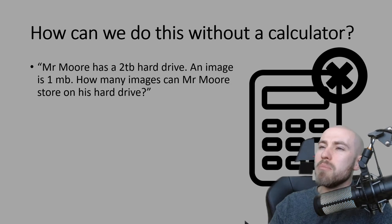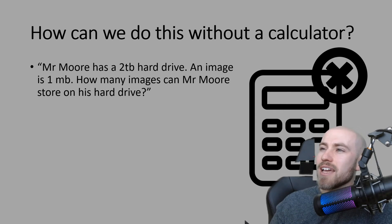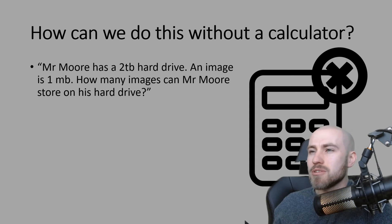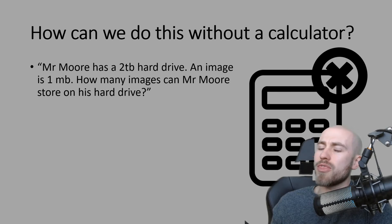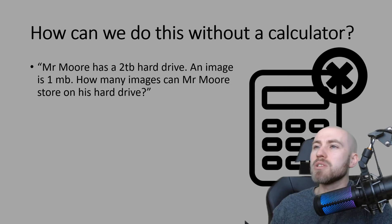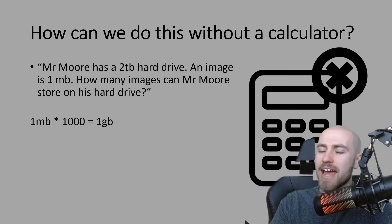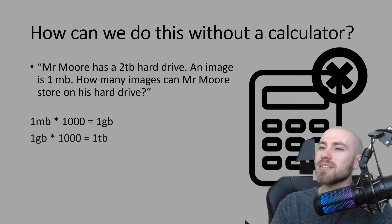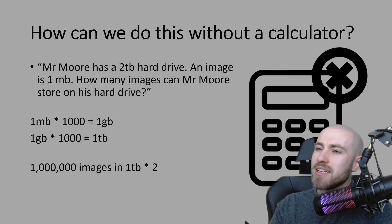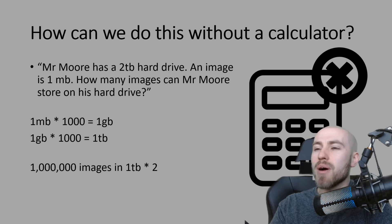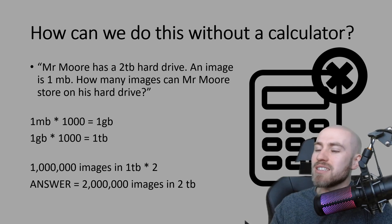Let's look at another one. Mr. Moore has a two terabyte hard drive. An image is one megabyte. How many images can Mr. Moore store on his hard drive? This is almost the exact same question we've just had — but notice how differently it's been worded. You just need to not overthink it: figure out how many megabytes are in one terabyte, and once we have our answer we multiply by two because it's two terabytes. One megabyte times a thousand gets us to one gigabyte; multiply by a thousand again gives us one terabyte — that's one million images per terabyte — so we times that by two. The answer is two million images in a two terabyte hard drive, if they were all exactly one megabyte. That's a lot of images!